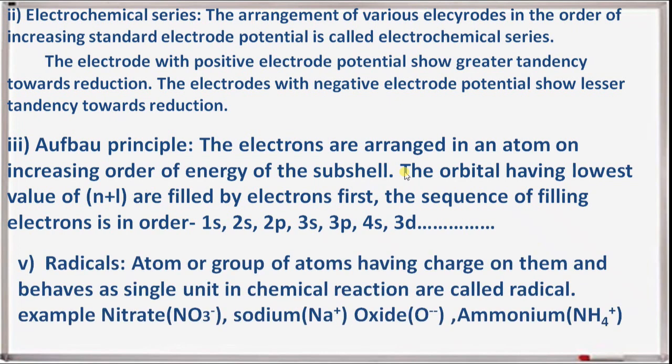Fourth short note: radicals. Atoms or groups of atoms having a charge on them and behaving as a single unit in chemical reactions are called radicals. Examples: nitrate NO3⁻, sodium Na⁺, oxide O²⁻, ammonium NH4⁺.